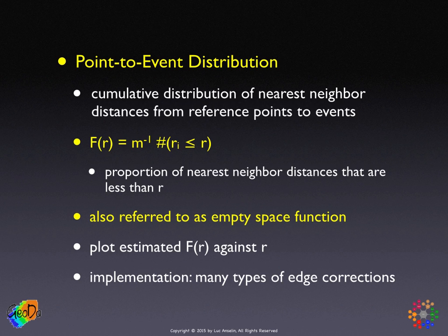As in the case of the G function, there are many types of edge corrections — they're basically the same. It's exactly the same idea, but it is applied to the point-to-event nearest neighbor distances rather than the event-to-event nearest neighbor.